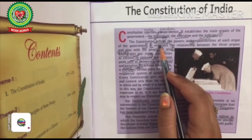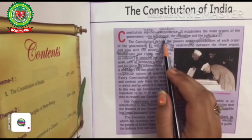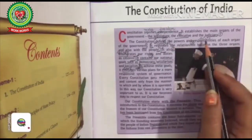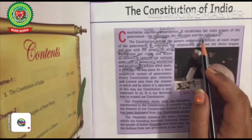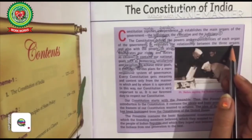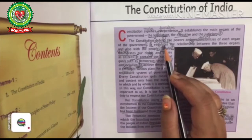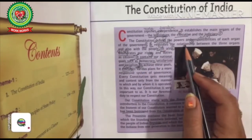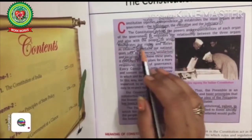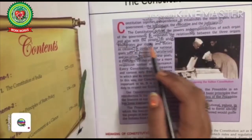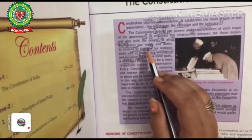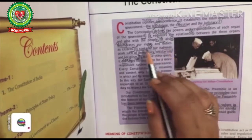What does the Constitution define? Number one, it defines the powers and responsibilities — that is, the duties — of each organ of the government. Number two, it regulates, meaning it controls, the relationship between the three organs and also with the people. Number three, it also enumerates — specifies — our fundamental rights and our fundamental duties: what rights we have and what duties we must perform to secure those rights.